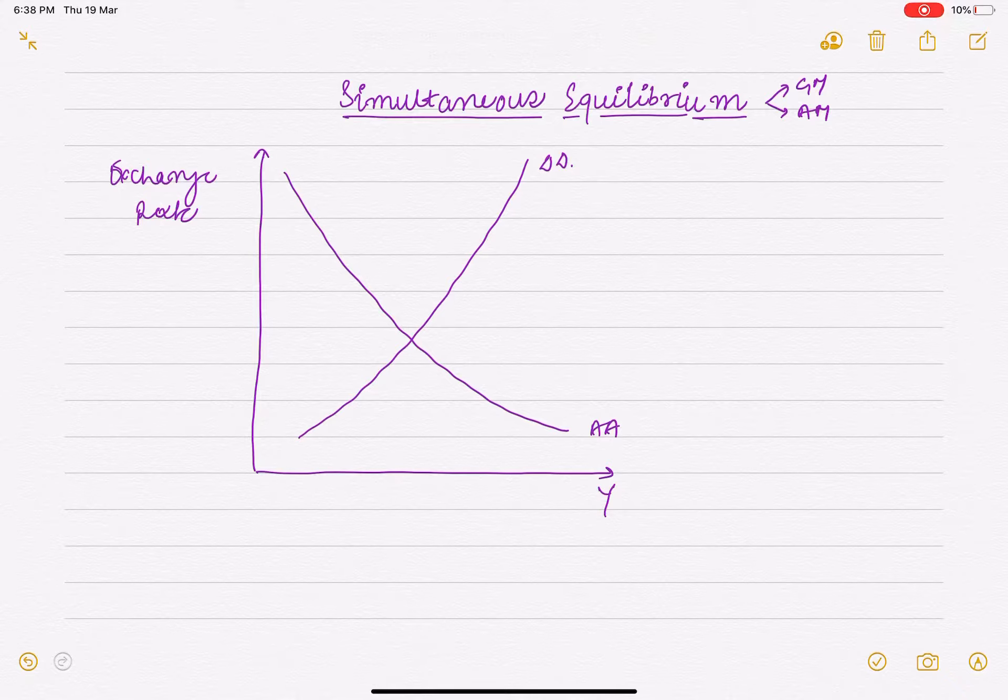So we know the DD curve - right side of the curve is excess supply of goods, left side excess demand of goods. For the asset side, right side there is excess demand for money, left side excess supply of money.